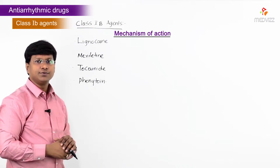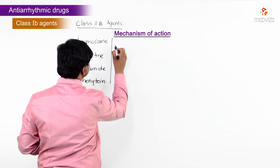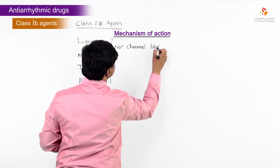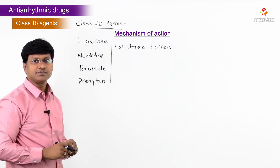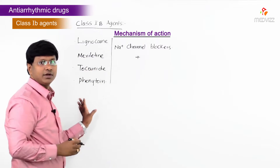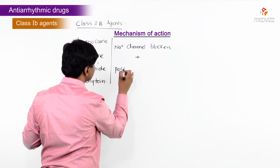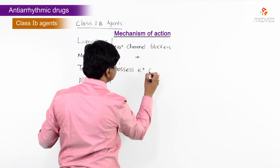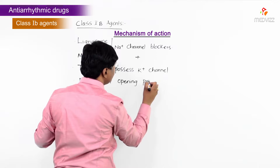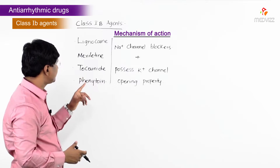The mechanism of action of Class 1b agents: these are sodium channel blockers. Along with the sodium channel blocking activity, these drugs also possess potassium channel opening property. This is the mechanism for lignocaine, mexiletine, tocainide, and phenytoin.